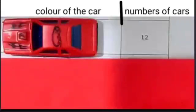On one side of the list he wrote color of the car, and on the other side of the list he wrote number of cars. First of all he wrote the number of red cars. The number of red cars is 12.